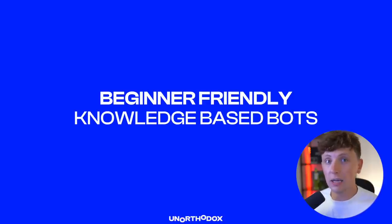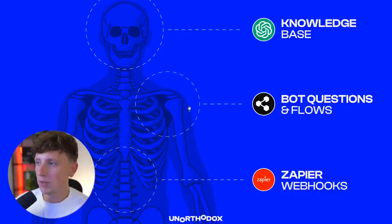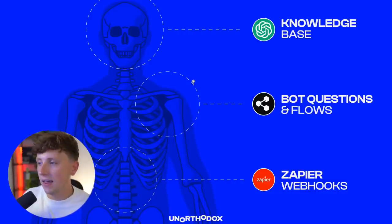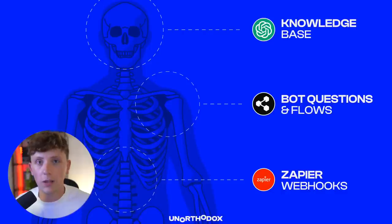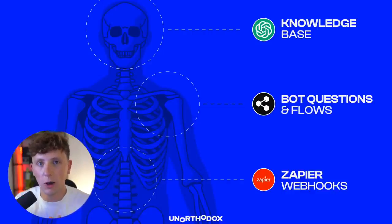This is the super easy beginner-friendly way because it doesn't involve any integrations from external AI platforms and you don't need to get devs involved. I think of these bots like a human body: the knowledge base is the brain, the BotPress bot setup with all the flows is the skeleton that holds it all together, and Zapier and webhooks are like the organs — they take good stuff out of the body and bring good stuff in. So we have the knowledge base, the bot setup, and the Zapier webhooks to manage leads.